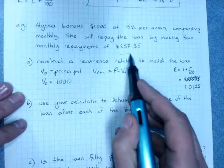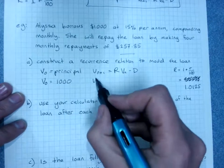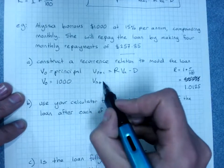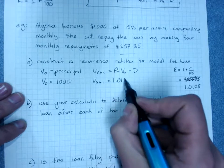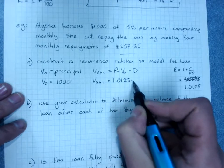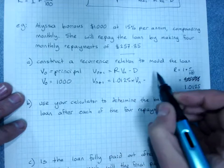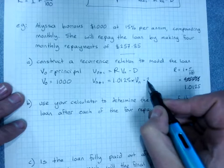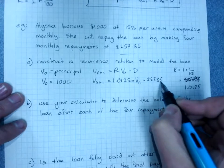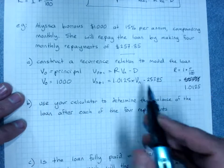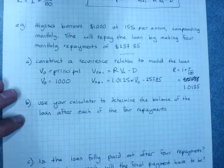We have the repayment, which is D = $257.85. So V(n+1) = 1.0125·Vn − 257.85. That's the recurrence relationship for this loan.